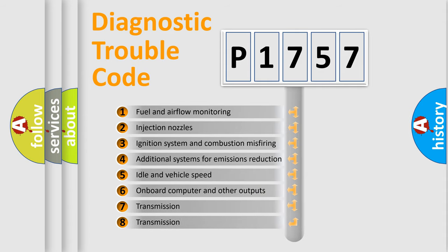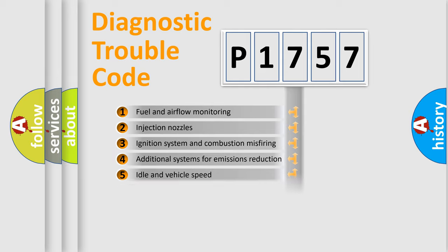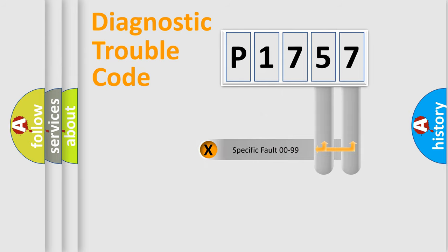The third character specifies a subset of errors. The distribution shown is valid only for the standardized DTC code. Only the last two characters define the specific fault of the group.